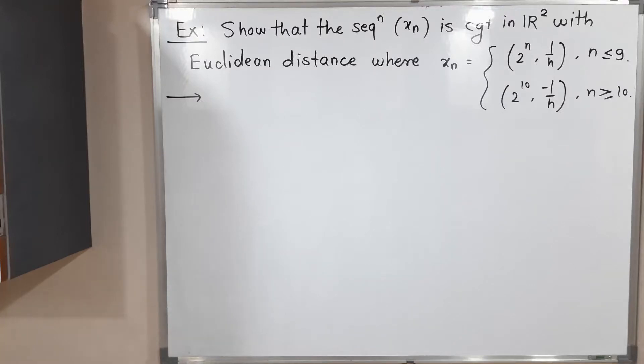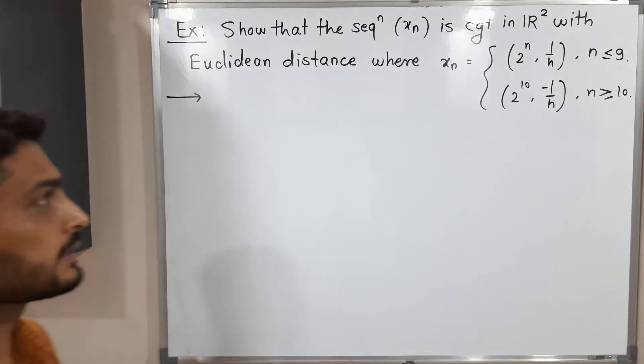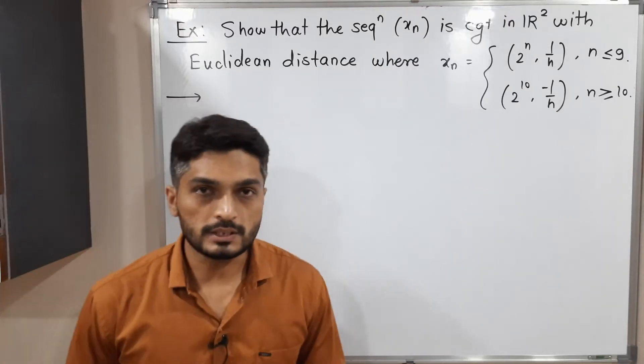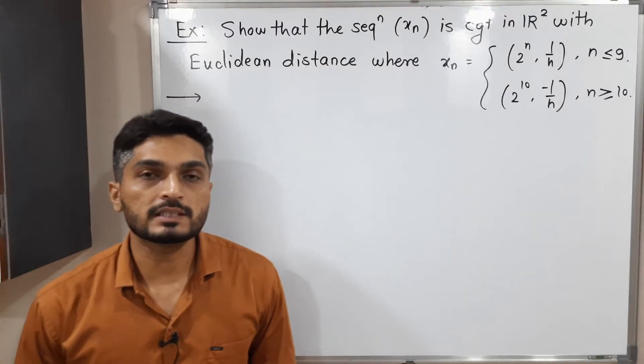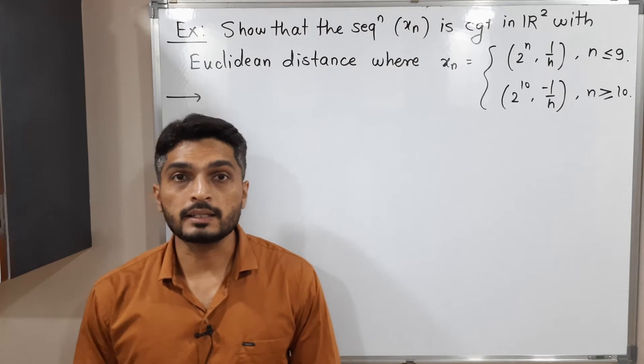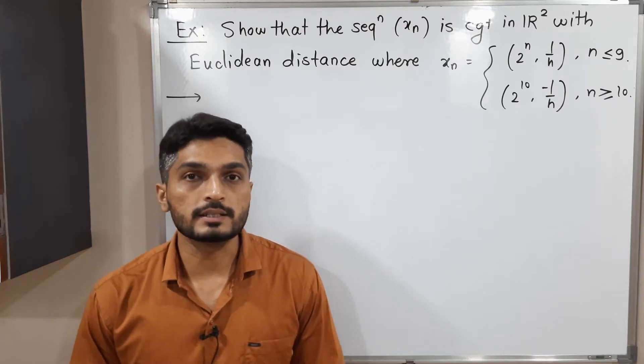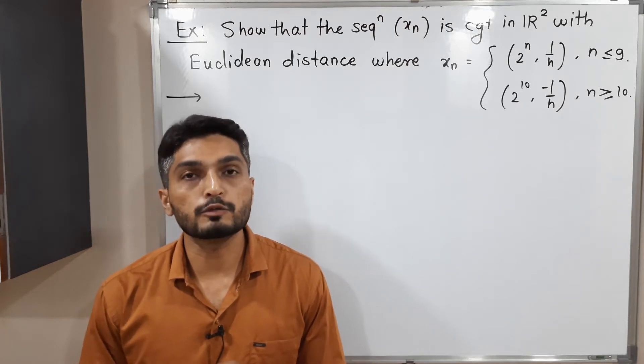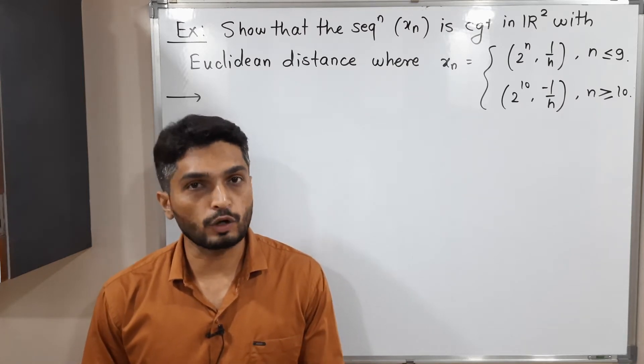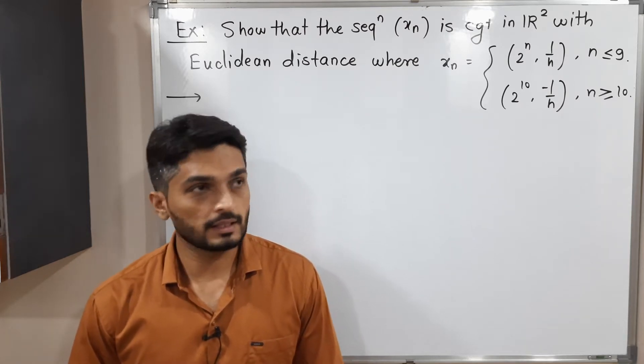Hi everyone, let us discuss this example. In this example, we have a sequence Xn in R² with a Euclidean distance and we have to prove that it is a convergent sequence.